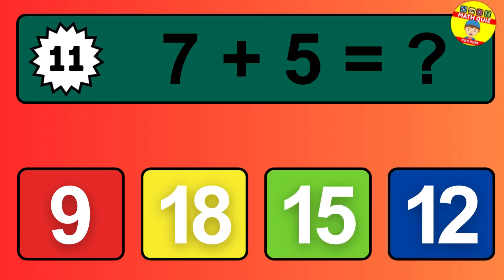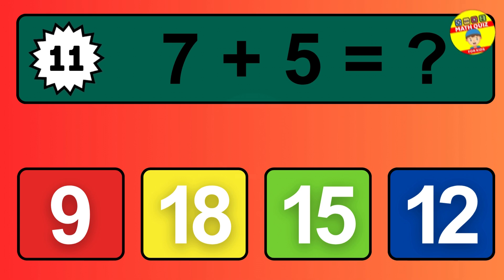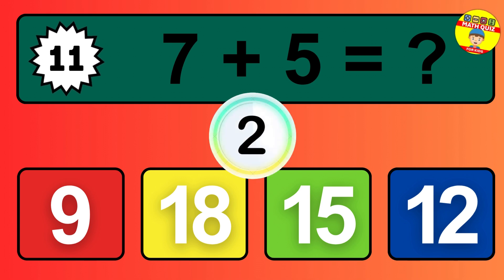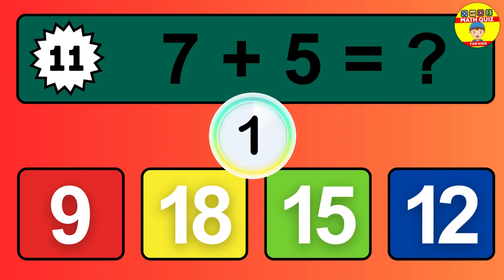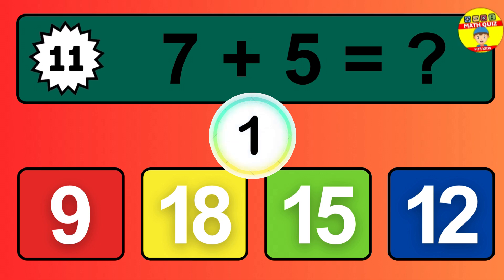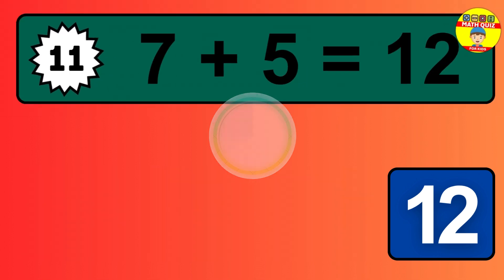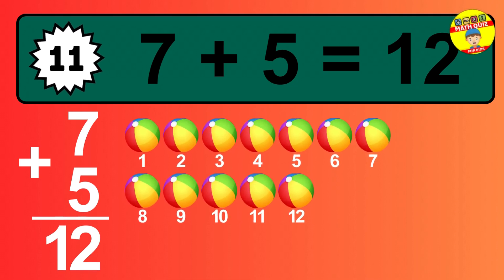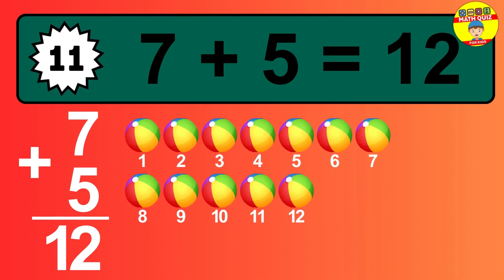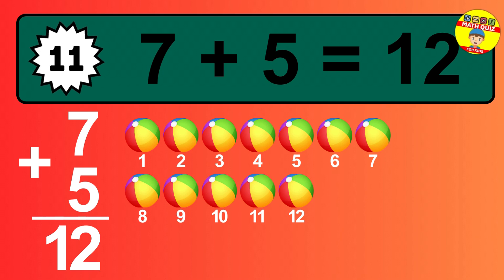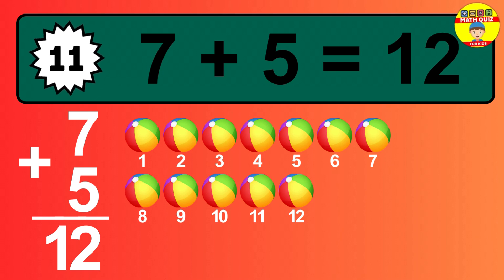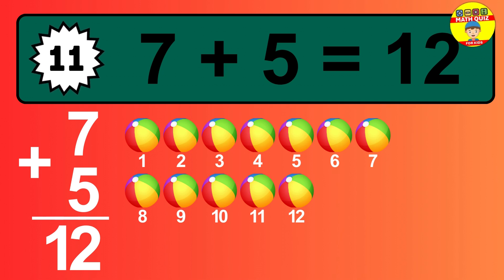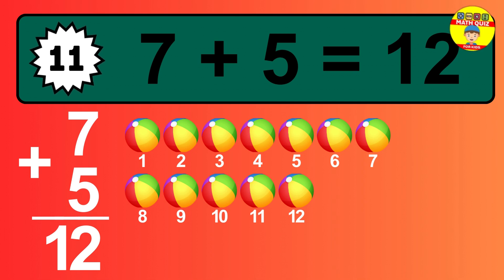Question 11. 7 plus 5 equals what? The answer is 7 plus 5 is 12. Let's count it. 1, 2, 3, 4, 5, 6, 7, 8, 9, 10, 11, 12.